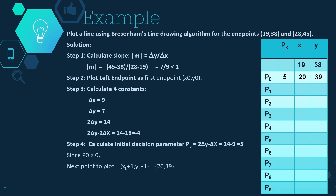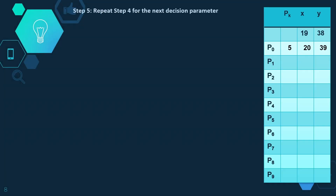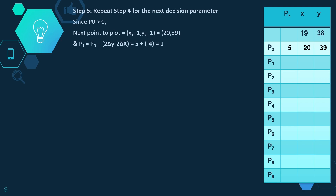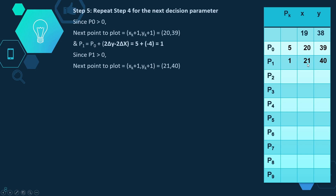Now we calculate the next decision parameter. Since p0 is greater than 0, the formula is p1 = p0 + 2 delta y minus 2 delta x = 5 + (minus 4) = 1. Since p1 = 1 is again greater than 0, we increment both x and y coordinates: 20 becomes 21 and 39 becomes 40, so the next point to plot is (21, 40).